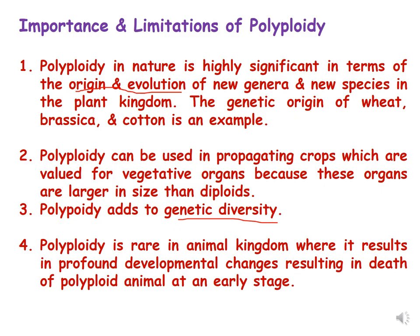In this lecture we have covered two more examples — Brassica and cotton evolution. In previous lectures we also covered Triticum species and Raphanobrassica. Polyploidy is highly significant in the origin and evolution of new genera and species in the plant kingdom, and the genetic origin of wheat, Brassica, and cotton are clear examples, as polyploidy results in evolution of new species and adds to genetic diversity.